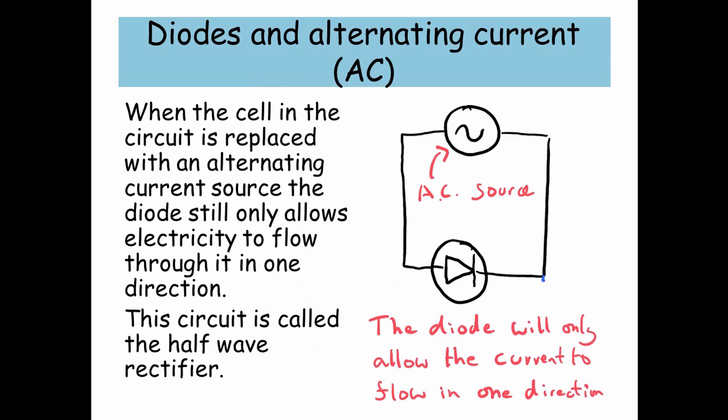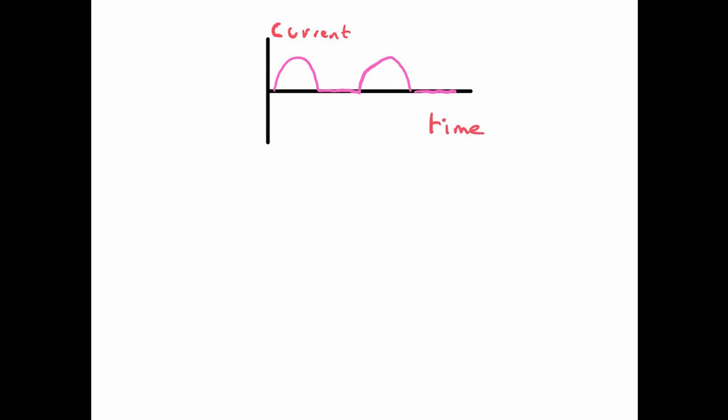Now, diodes and alternating current. So when a cell in the circuit is replaced with an alternating current source, the diode still only allows electricity to flow through in one direction. And this circuit is called the half-wave rectifier. The diode will only allow the current to flow in one direction.